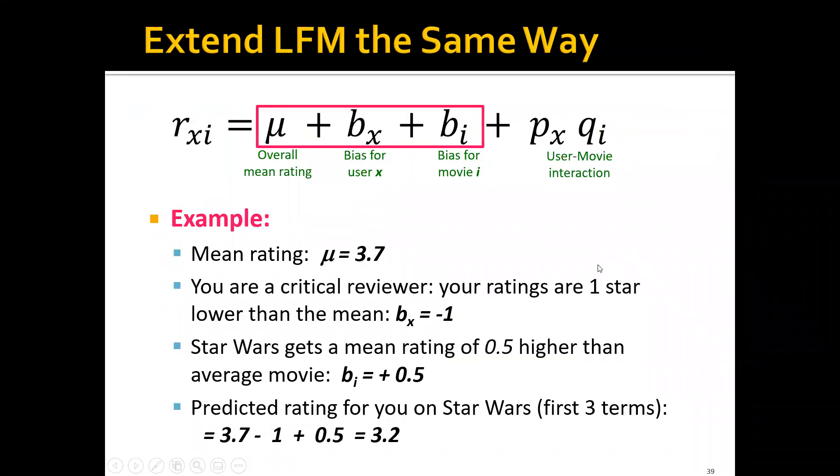We can extend the latent factor model the same way. Concretely, we can predict the rating from user x to item i using this equation. It's the sum of four terms. We have the overall ratings, the global ratings among all the users to all the movies, which is mu.